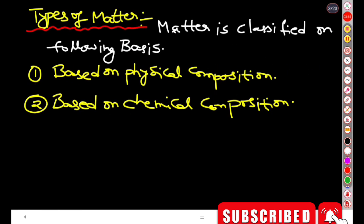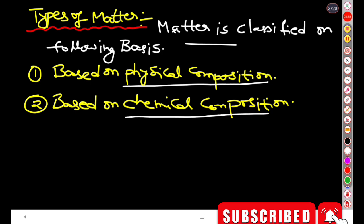What we classify as matter is categorized on the basis of two categories. First is physical composition based classification, and second is chemical composition based classification.